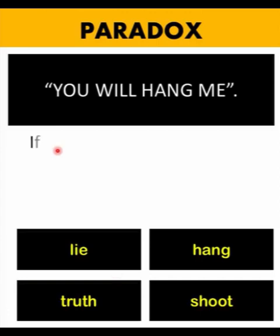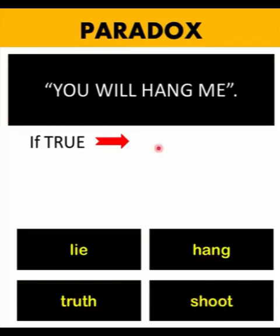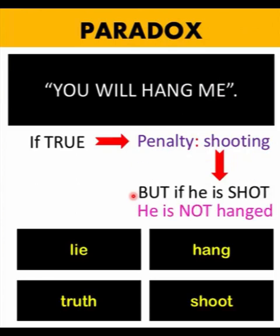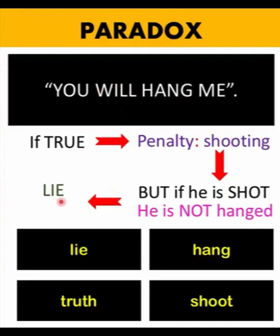First, if the statement is true, that means the penalty should be shooting according to this table. So the prisoner will be shot. But if the prisoner was shot, that implies that he is not hanged. So if the prisoner is not hanged, that implies that the statement "you will hang me" is a lie.